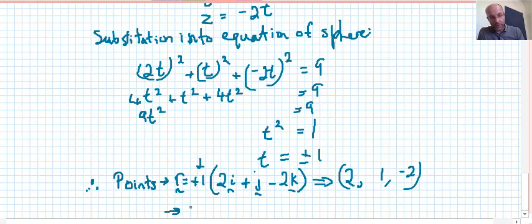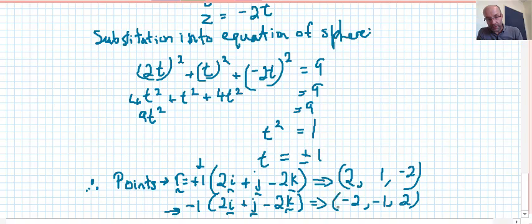Now for the final part, where we use the negative value, times by the vector r. This is applying the definition of the vector equation to a sphere. So we have a negative 2, minus 1, and positive 2 on the end, so we have the point negative 2, negative 1, and 2.